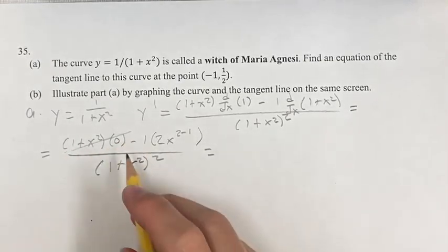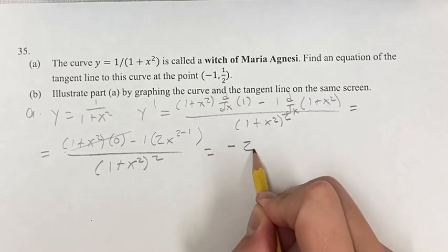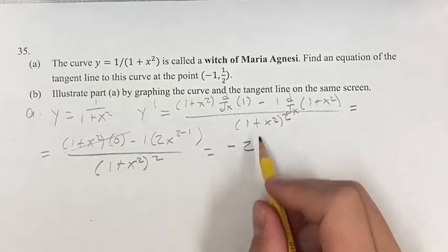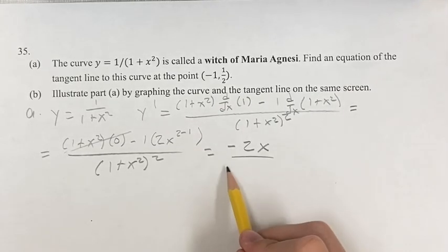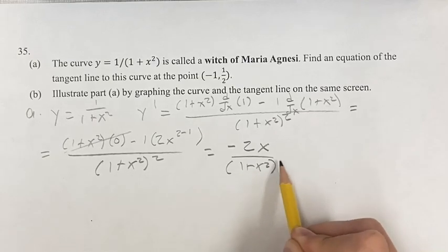This times 0 is just 0, so then we get negative 1 times 2 is 2. x to the 2 minus 1 is x to the first power, which is just x, over 1 plus x squared squared.